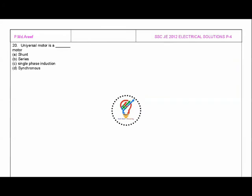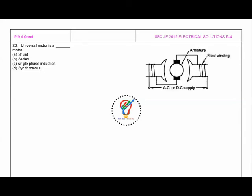The next question is: universal motor is a what type of motor? Shunt motor, series motor, single phase induction motor, or synchronous motor. First of all, the definition for universal motor means it should work on both the nature of supplies, that is AC as well as DC.